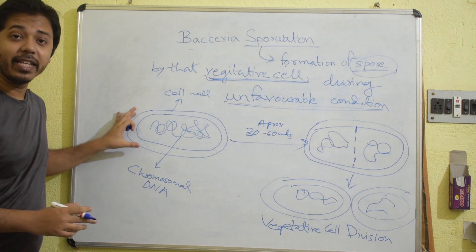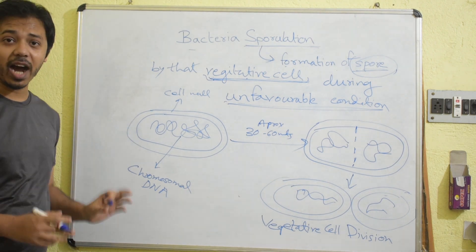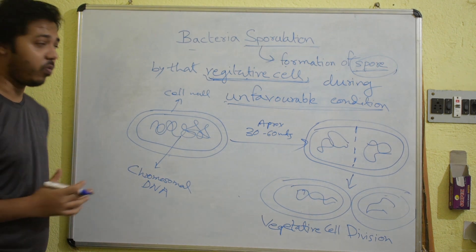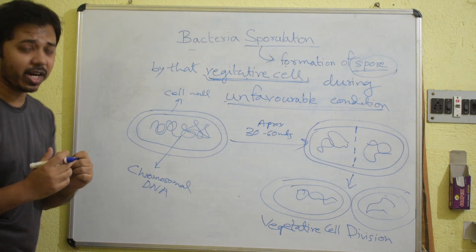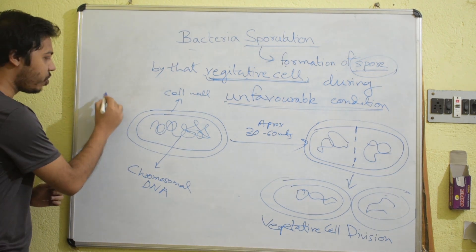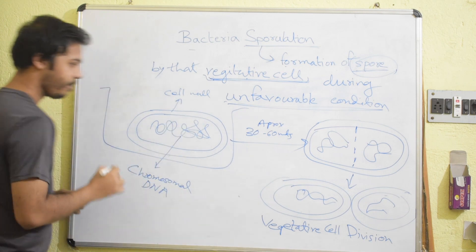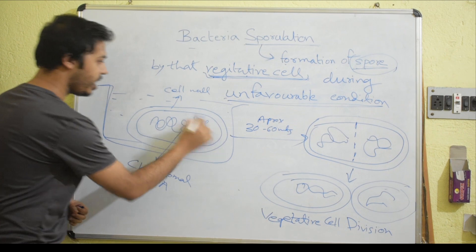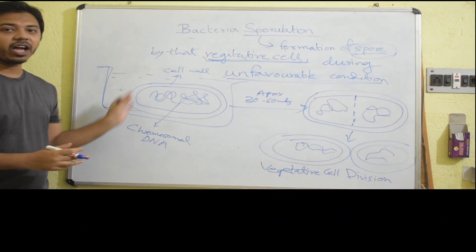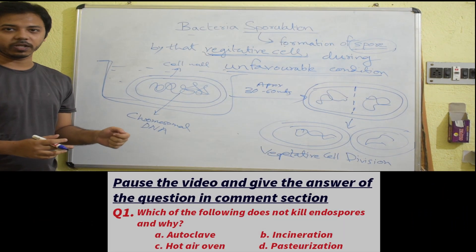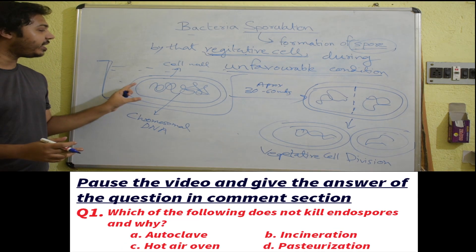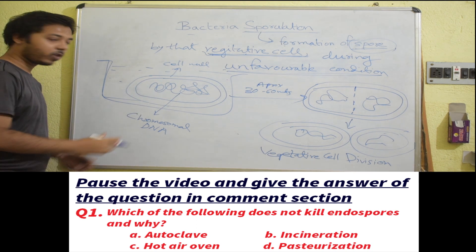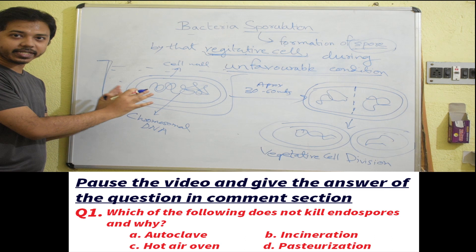Now, when these microorganisms are under an unfavorable condition — we have to understand what is called unfavorable condition. Suppose in this beaker there are nutrients, a nutrient media for the growth of this microorganism. From this nutrient media it can get sufficient nutrients for its growth. Till now it is a favorable condition.